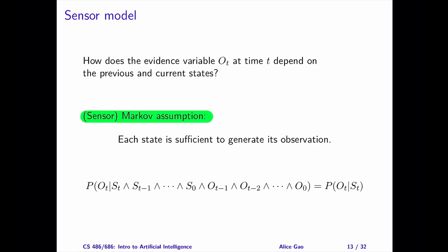The sensor Markov assumption says that each state has sufficient information to generate its observations. Therefore, O sub t needs to condition on S sub t only. We can simplify the conditional probability to the probability of O sub t given S sub t.